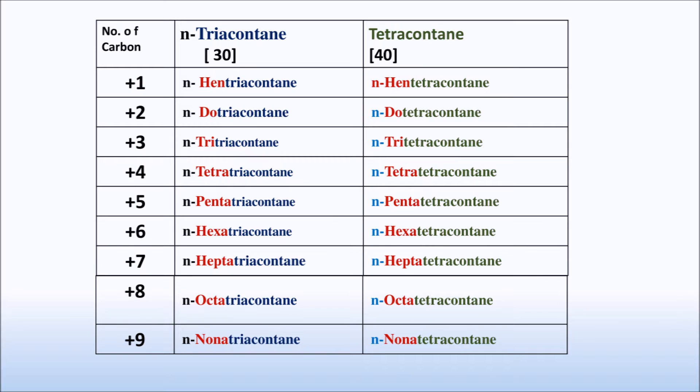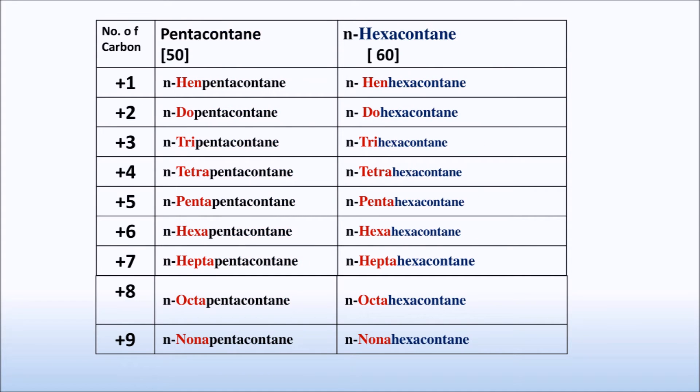Thirty is triacontane, and the prefix for one is hen. So thirty-one is hen-triacontane, thirty-two is do-triacontane, thirty-three is tria-triacontane, and thirty-four is tetra-triacontane. Forty-eight is octa-tetracontane.